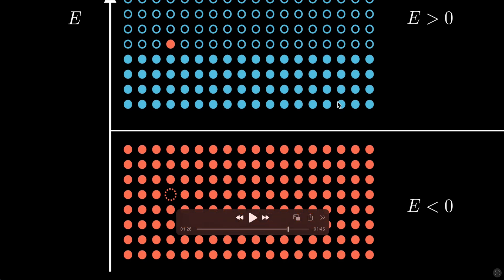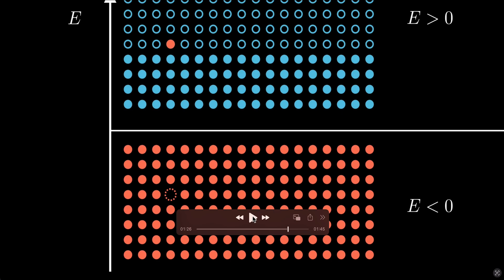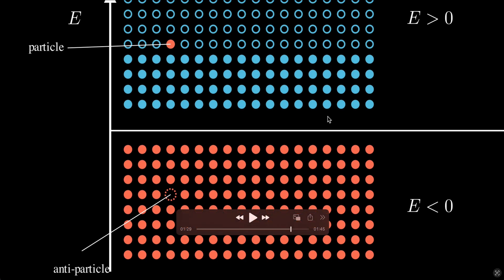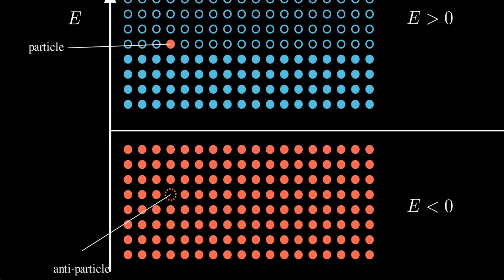This antiparticle — now called the positron — was later experimentally verified by the famous experiment of Anderson. Both Dirac and Anderson received Nobel Prizes for these discoveries. The Dirac Hole theory therefore describes not only normal electrons but also a completely new kind of matter: antiparticles, in this case the positron.